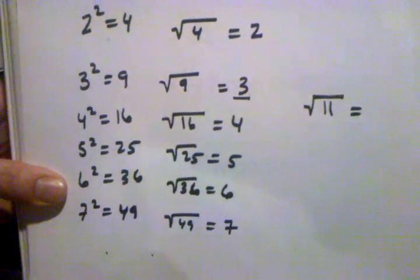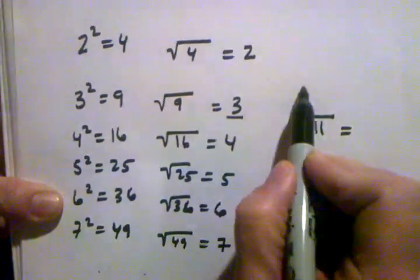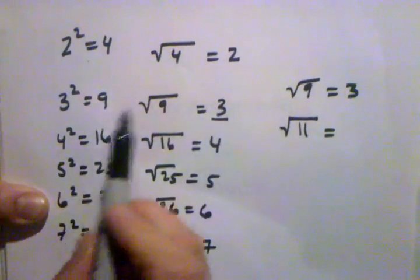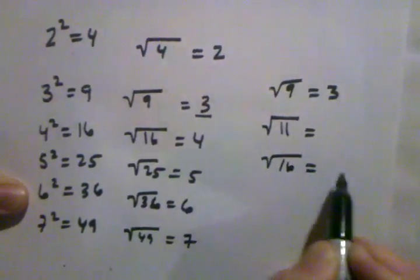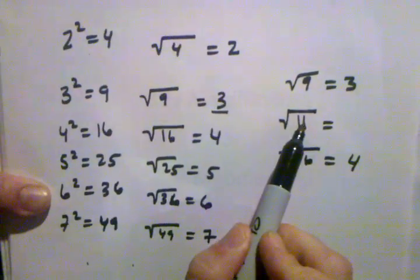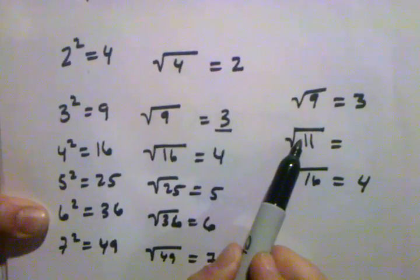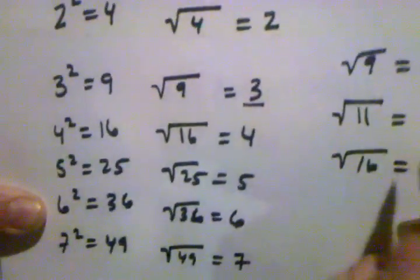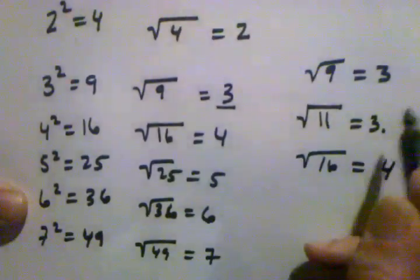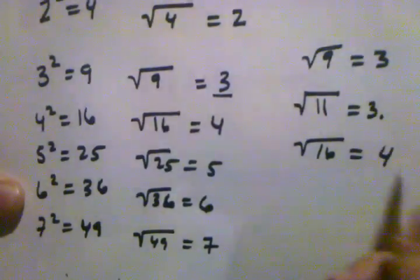But we can estimate. I know the square root of nine is three, and the next perfect square is sixteen, so the square root of sixteen equals four. About where does eleven fall between nine and sixteen? Eleven is a little bit closer to nine, so the answer is going to be three-point-something — not too much bigger, maybe closer to three than to four.